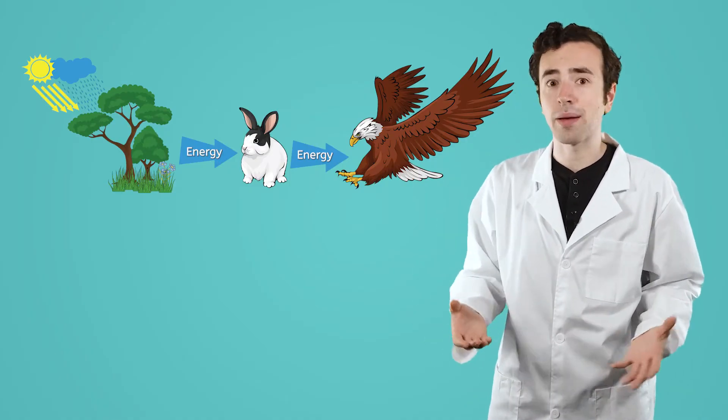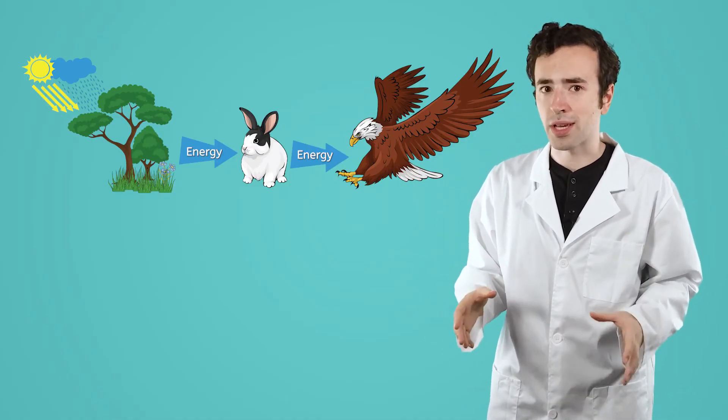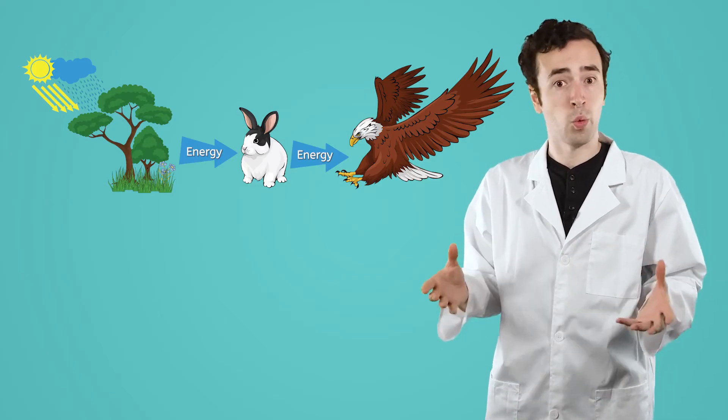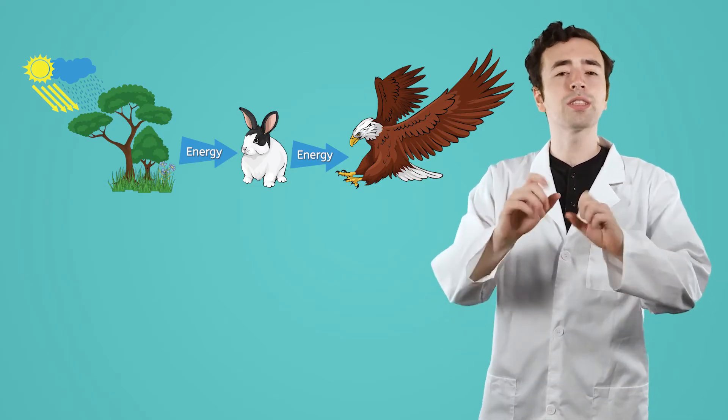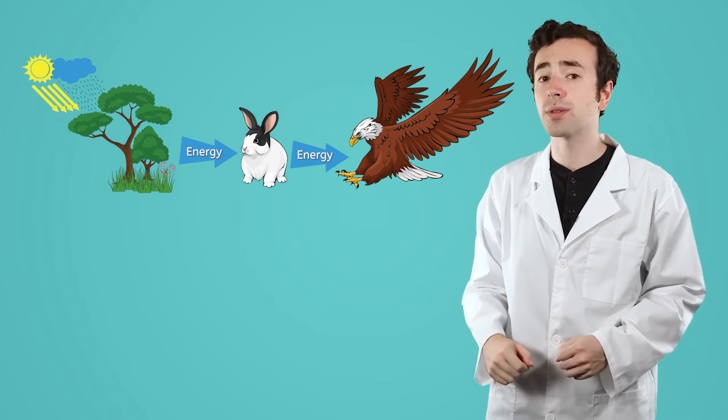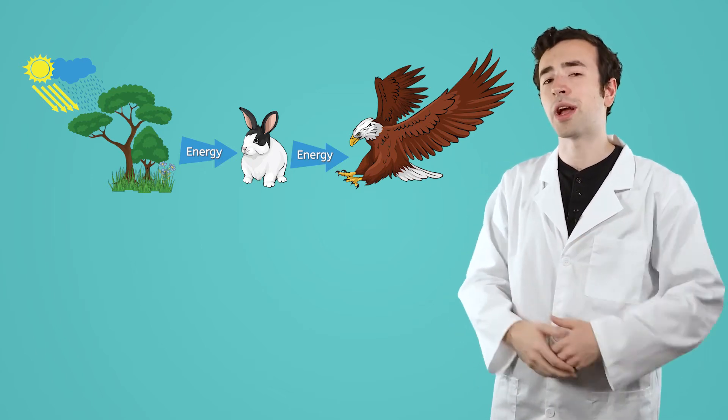So producers get energy by making their own food, and consumers get energy by eating producers or other consumers. Pause the video here and determine which organisms are producers and which are consumers in your guided notes.